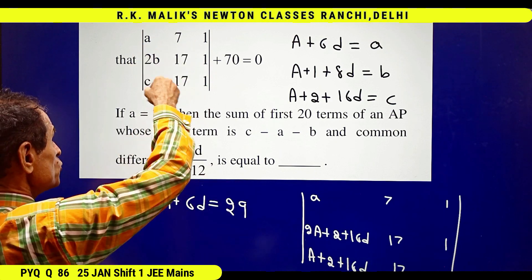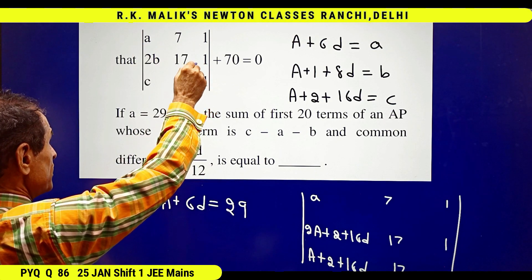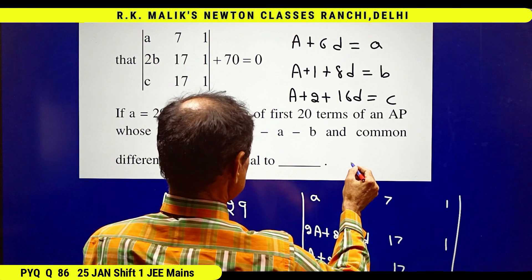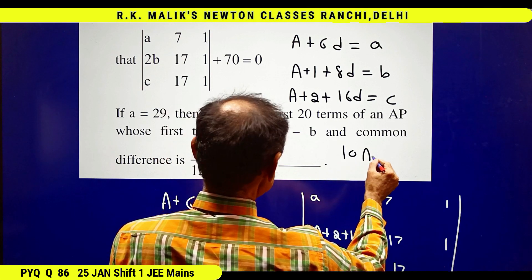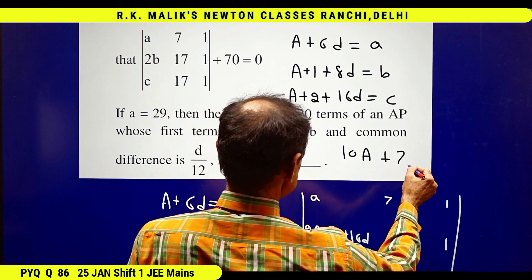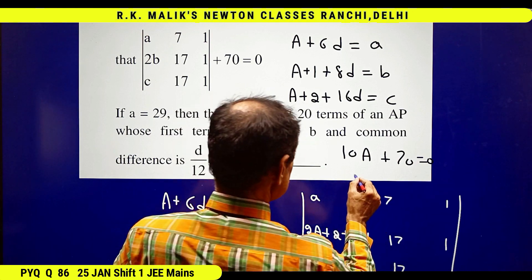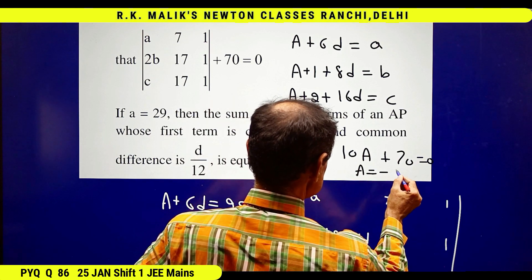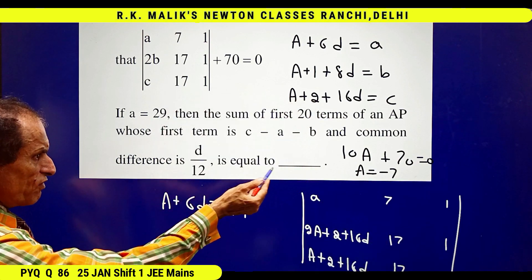That is, I get the value of A as minus 7. Once the value of A is known, putting the value of A, I get 6D equal to 36, that is D equal to 6.